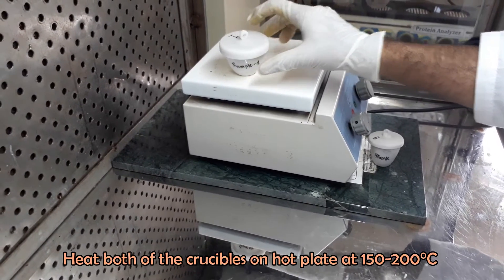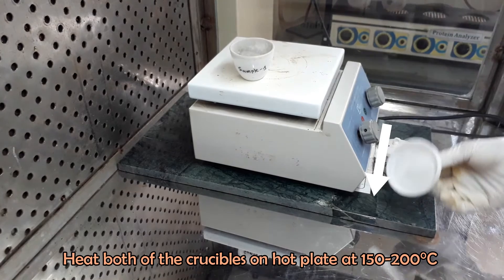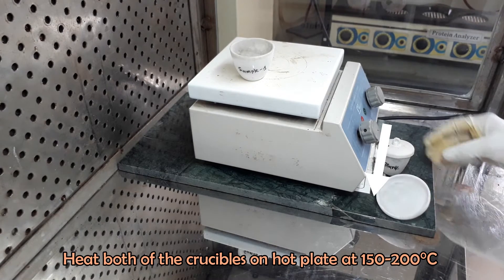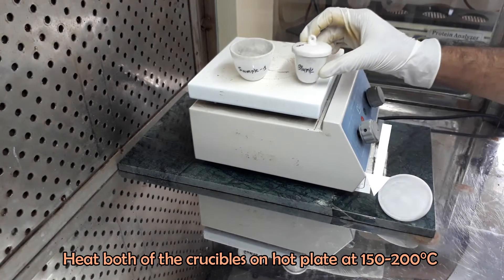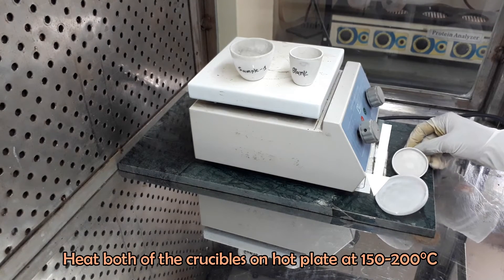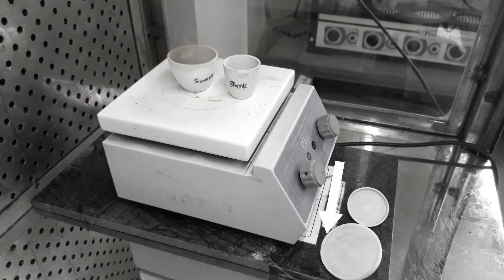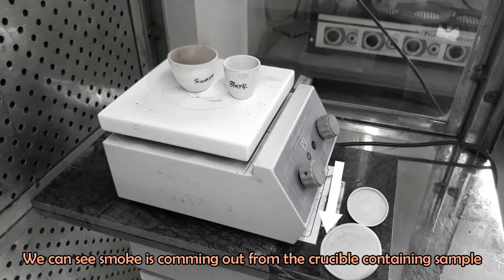Heat both of the crucibles on hot plate at 150 to 200 degrees Celsius. We can see smoke is coming out from the crucible containing sample.